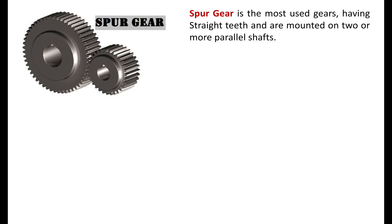In the last lecture, we have seen the classification of gears and why gears are used. I am repeating some part of that here, particularly in case of spur gear. A picture of spur gear is there on screen — two spur gears mounted on two parallel shafts, engaged with a number of teeth. Spur gear is the most used gear having straight teeth and mounted on two or more parallel shafts.